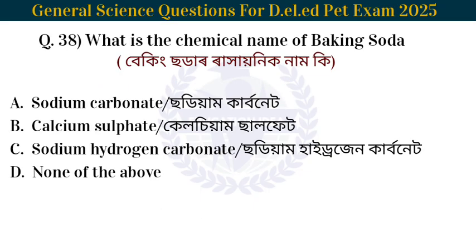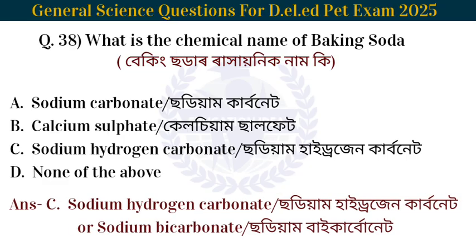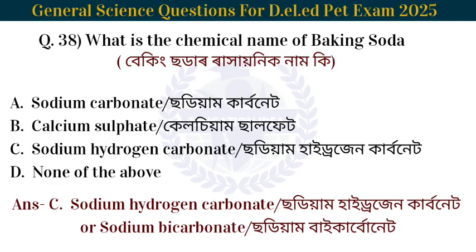Next question: What is the chemical name of baking soda? The chemical name of baking soda is sodium hydrogen carbonate, also known as sodium bicarbonate.